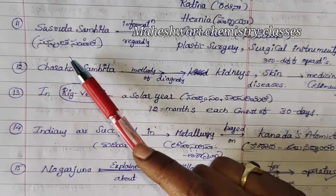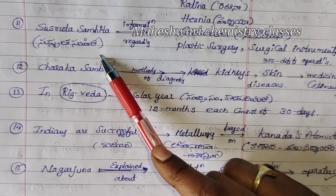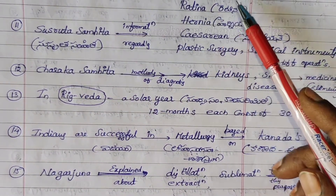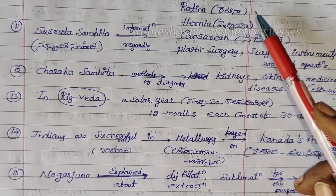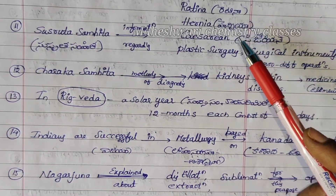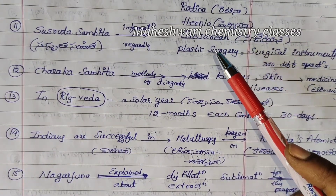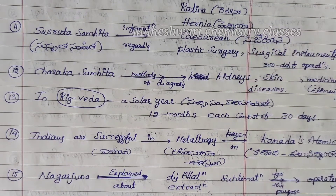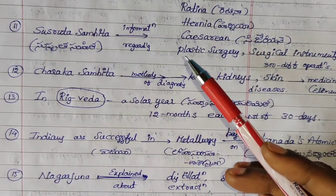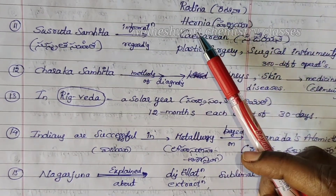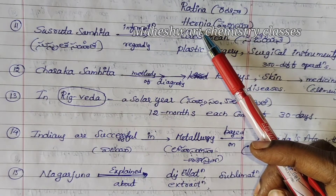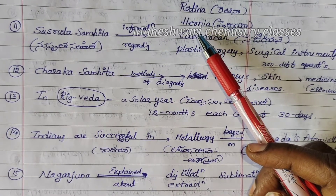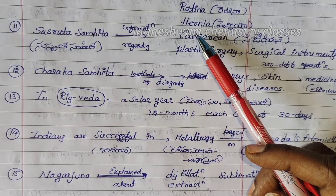Sushruta Samhita discusses hernia — a condition involving the abdominal and lower body area where an organ is displaced or shows abnormal inflammation. It is one type of hernia described in this ancient text.